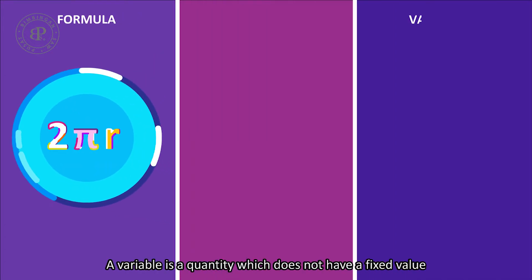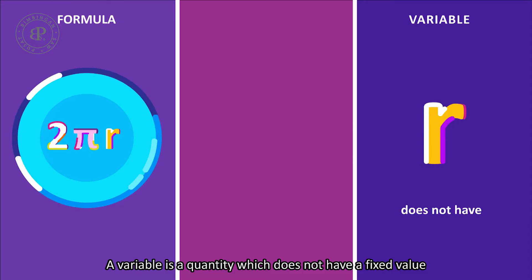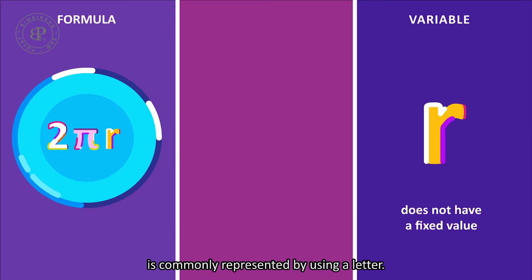A variable is a quantity which does not have a fixed value and is commonly represented by using a letter.